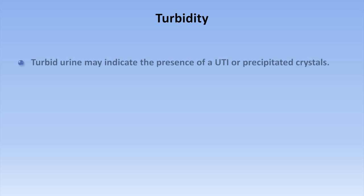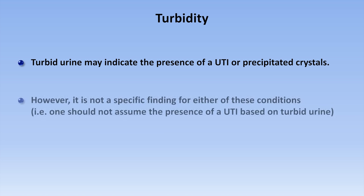The turbidity of urine — that is, how clear or cloudy it looks — is usually reported in very qualitative terms. Turbid urine may indicate the presence of a UTI or precipitated crystals. However, it's not a specific finding for either of those conditions, so just as with malodorous urine, you should never assume the presence or absence of a UTI based on the urine's turbidity.